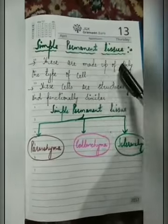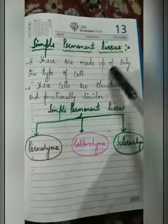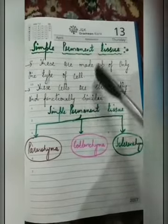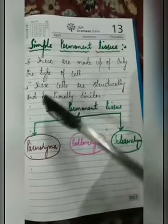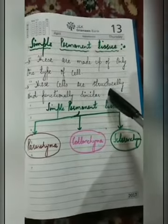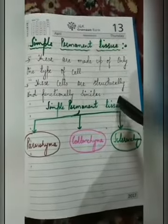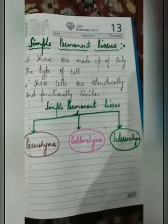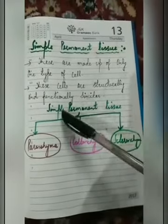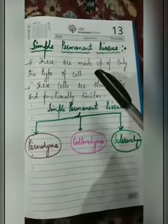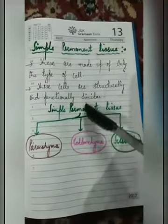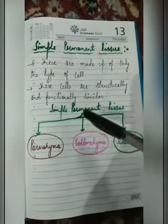Simple permanent tissues are made up of only one type of cell. These cells are structurally and functionally similar. This means that if one cell is oval in shape, all the cells are oval. Functionally similar means that all cells in the tissue carry out the same functions.